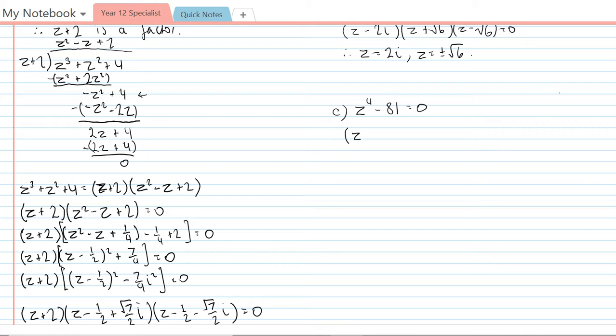That's going to leave z squared plus 9 and z squared minus 9 equals 0. So factorising each of these now,